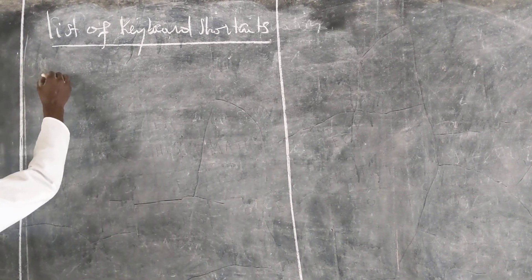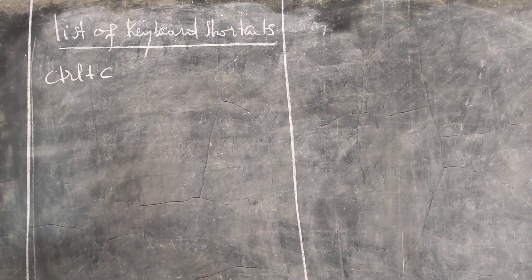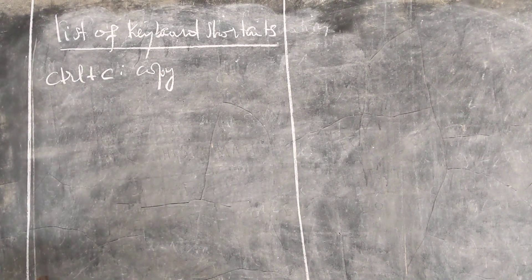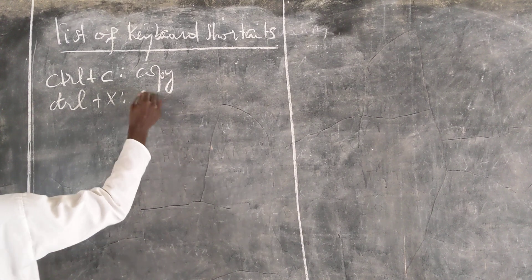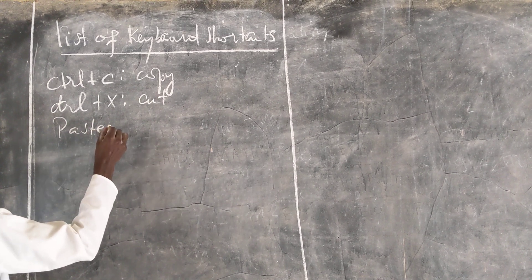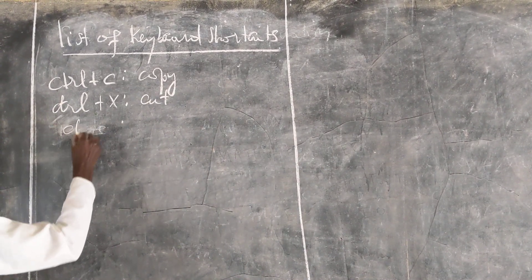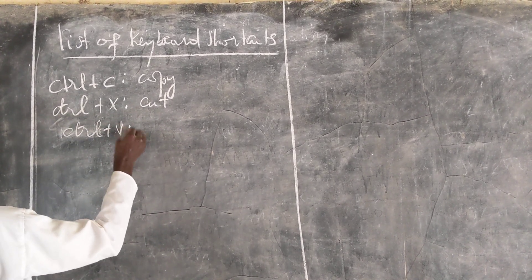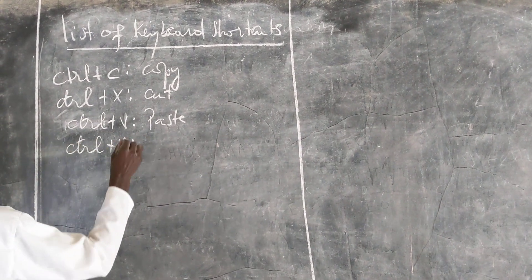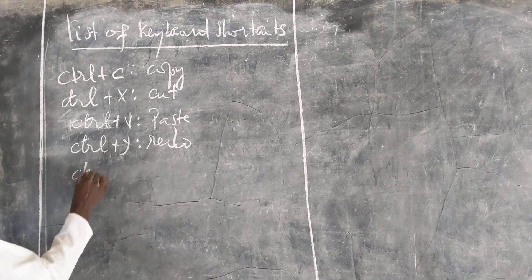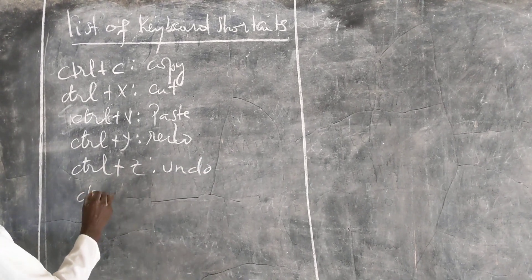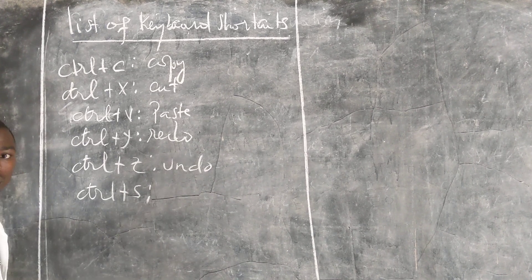The first shortcut is let us say today Ctrl plus C which is the copy. If you want to copy you can use this shortcut. Ctrl plus X this is a cut. When you are cutting something and then paste. So here it will be Ctrl plus V this is a paste. So now this is Ctrl plus Y this is redo. Ctrl plus Z this is undo.